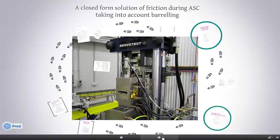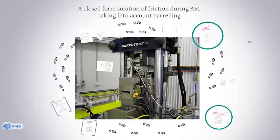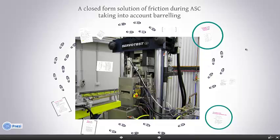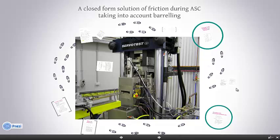I hope this presentation has provided some insight for performing the axisymmetric compression test more accurately. You should now be able to estimate friction based on geometry, and once you know the friction — using the exact solution taking into account barreling, though still isothermal — you can comfortably convert your compression test load-displacement data into flow stress behavior. That brings my presentation to its end. Thank you for listening.